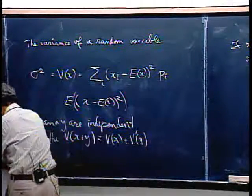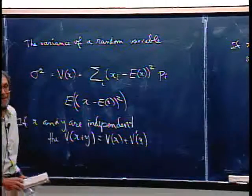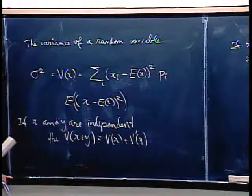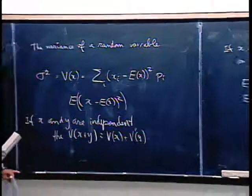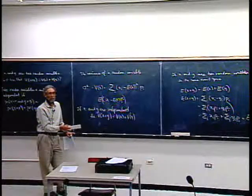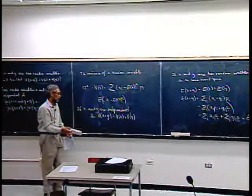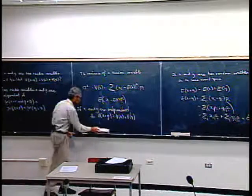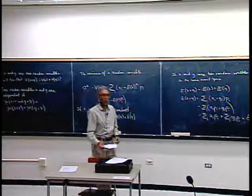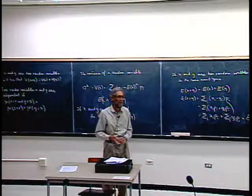If X and Y are independent, then the variance of X plus Y equals the variance of X plus the variance of Y. Think about how independence can be used to prove this fact, and I'll prove it in class next time. That uses up our time for today.